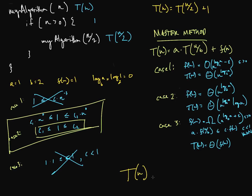Thus, our T of n is theta log n, since n to the log base b of a for us is 1, so that's 1 times log n.